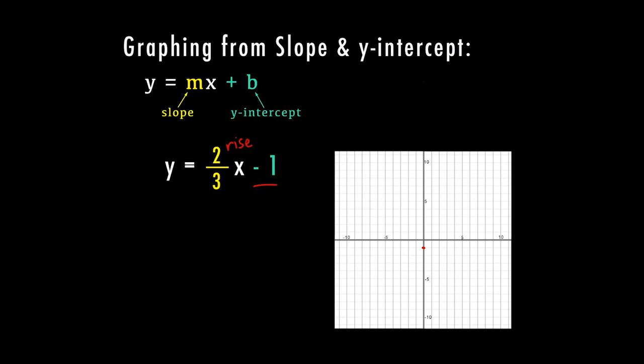So I'm going to go up 2, and my run is 3. When I start at this point, my y-intercept negative 1, I can count rise which is up 2 and then run over 3. So there's my next point, and I can continue doing this - up 2, right 3, up 2, right 3 - till I have enough points.